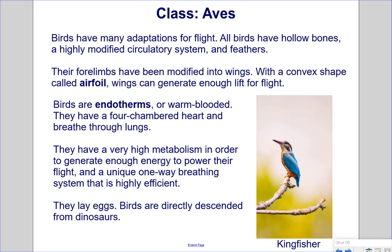Class Aves. Birds have many adaptations for flight, including hollow bones, a highly modified circulatory system, and feathers. Their forelimbs have been modified into wings, which with a convex airfoil shape generate enough lift for flight. Birds are endotherms — warm-blooded — with a four-chambered heart and lungs. They have a very high metabolism to power flight and a unique one-way breathing system that is highly efficient. They lay eggs and are directly descended from dinosaurs. Pictured here is the kingfisher.